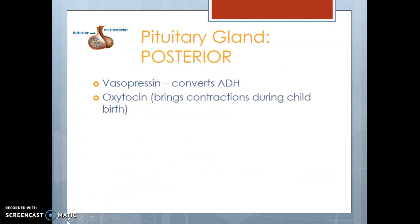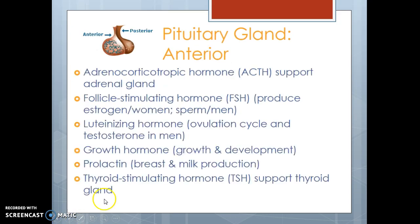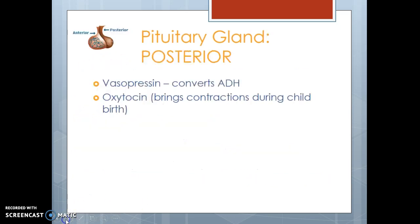The posterior pituitary gland doesn't do as much. It does secrete vasopressin, which helps convert ADH — the anti-diuretic hormone — which helps us hold on to water. And then oxytocin is a hormone secreted by the posterior pituitary gland that brings on contractions for childbirth to allow the baby to come into the world. It's important to know what each of these hormones do and which part of the pituitary gland they're secreted from.